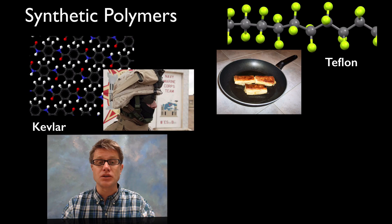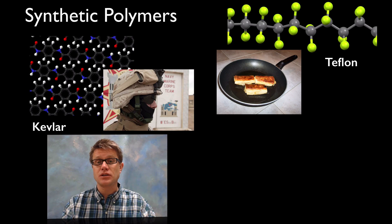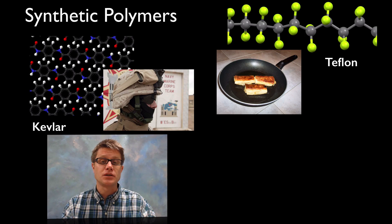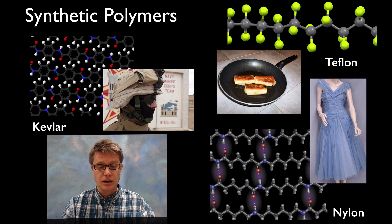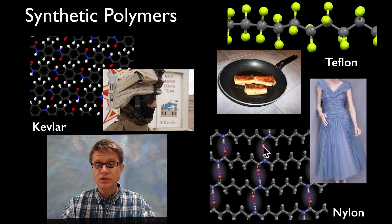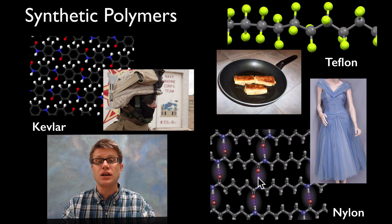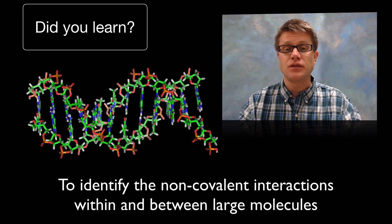If we were to look at Kevlar for example, its structure is going to give us that rigid function that's going to create that protective helmet or that Kevlar vest. Or if we were to look at nylon. If you look at nylon right here, these are all going to be intermolecular forces between adjacent strands of the nylon. And so that's going to give us its function as well.